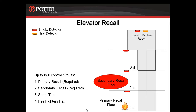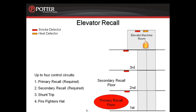When talking about shunt trip, shunt trip will trigger a relay that will indicate to the elevator controller that they need to kill the power to the elevator prior to the sprinkler head opening up in the elevator machinery. Therefore, the shunt trip relay is triggered when the heat detector in the elevator machine room activates. When that heat detector activates, we also want to recall the elevators to the primary floor of recall, which is the first floor.